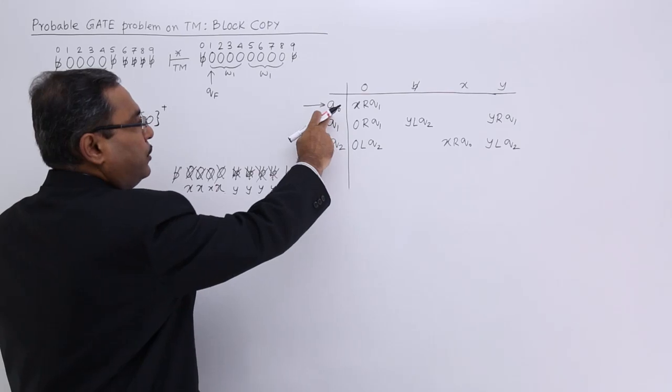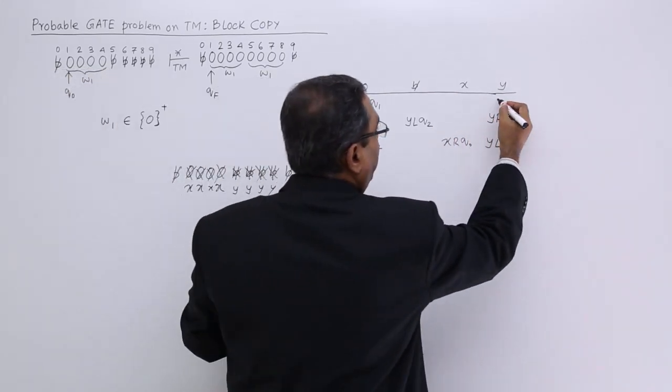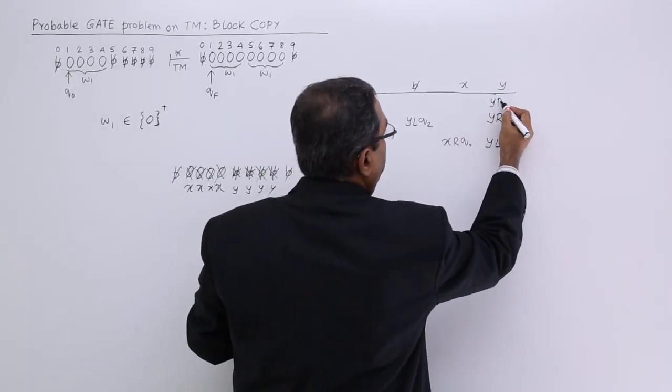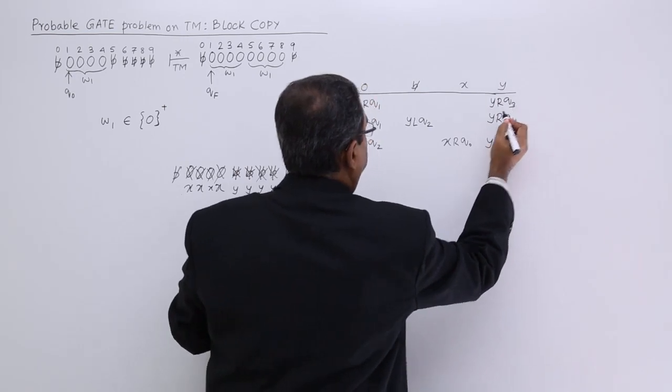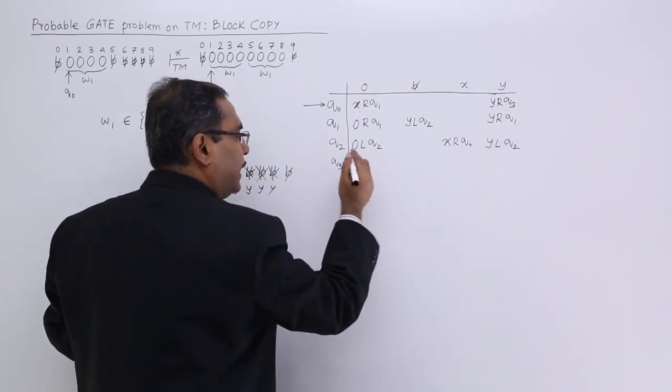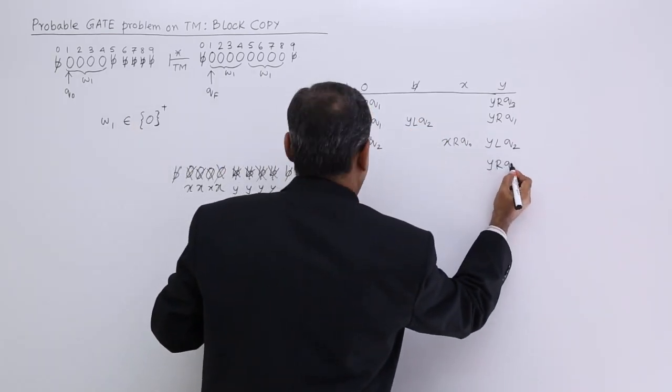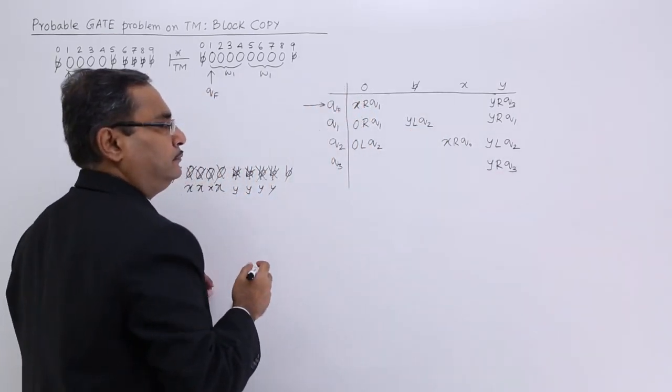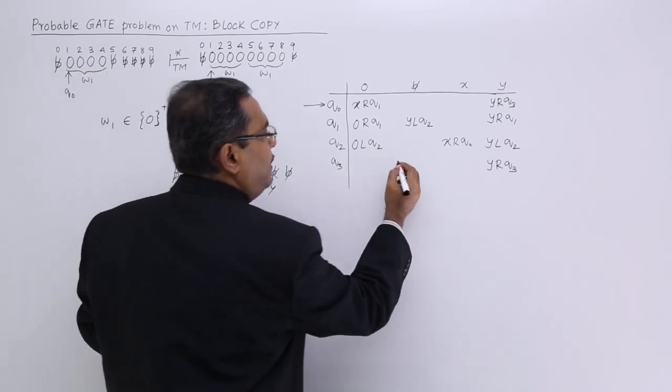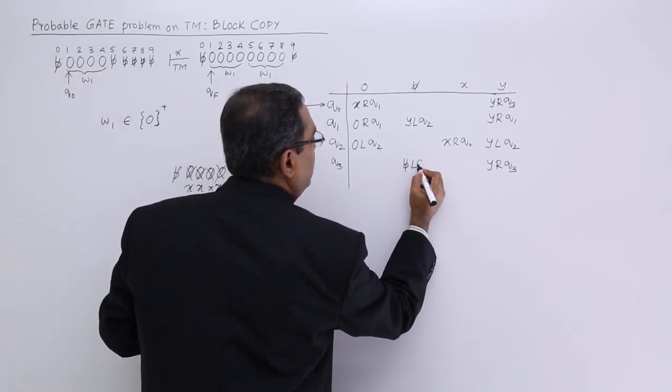So, q0 has got y. So, y will be written as y right hand side q3. So, q3 will move through all y's. So, y r q3 until it gets a blank. So, blank it will get. So, blank l q4.